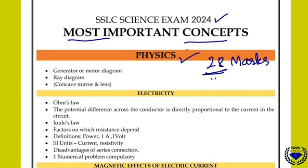The first thing in physics is you may expect two to three diagrams. Those are: generator and motor diagrams from the magnetic effect of electric current, and ray diagrams — compulsory mirror or lens. Plus you should know the biogas diagram. For sources of energy, only two marks is fixed for the biogas diagram.